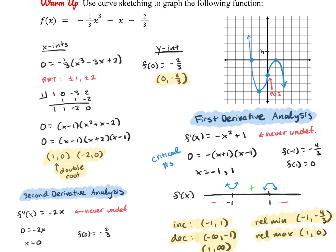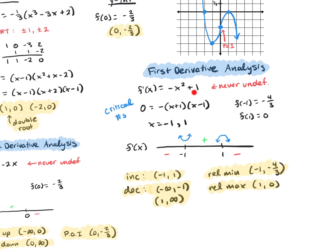We do have a double root at (1, 0), so we know for polynomials that we'll touch and turn. Here's our y-intercept, and then we move on to our first derivative analysis. Our critical numbers occur when the derivative is either undefined or 0, so that only occurs at negative 1 and 1. The sign analysis tells us the graph is increasing from negative 1 to 1, and decreasing from negative infinity to negative 1 and from 1 to infinity. Since it is changing signs, we have a relative minimum and a relative maximum.